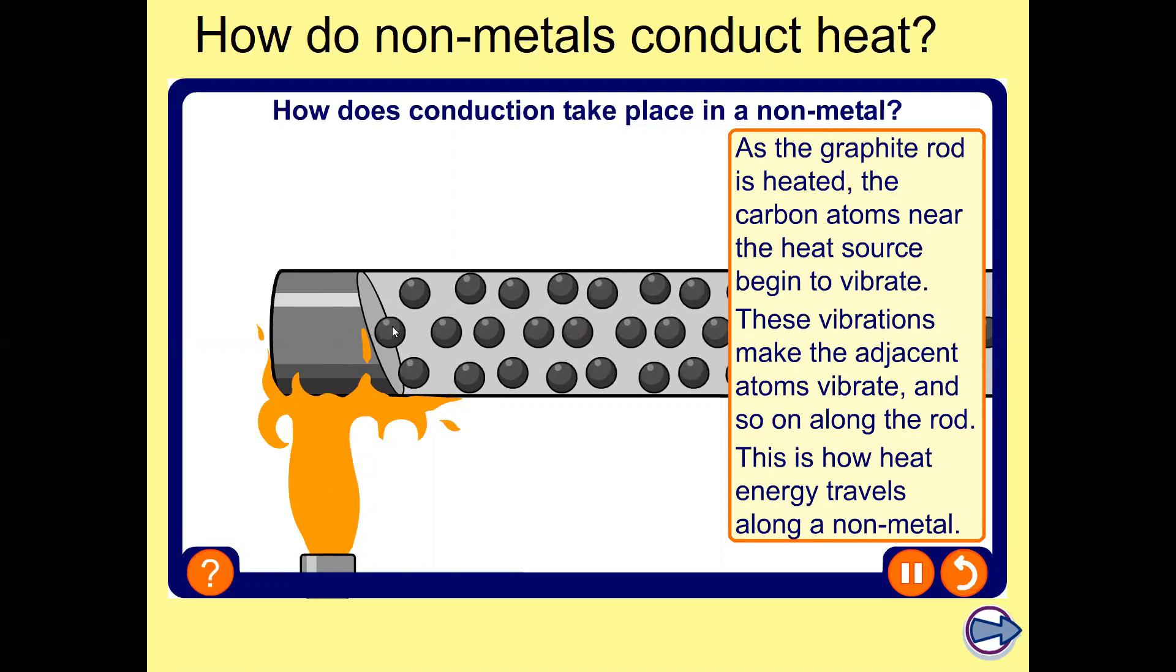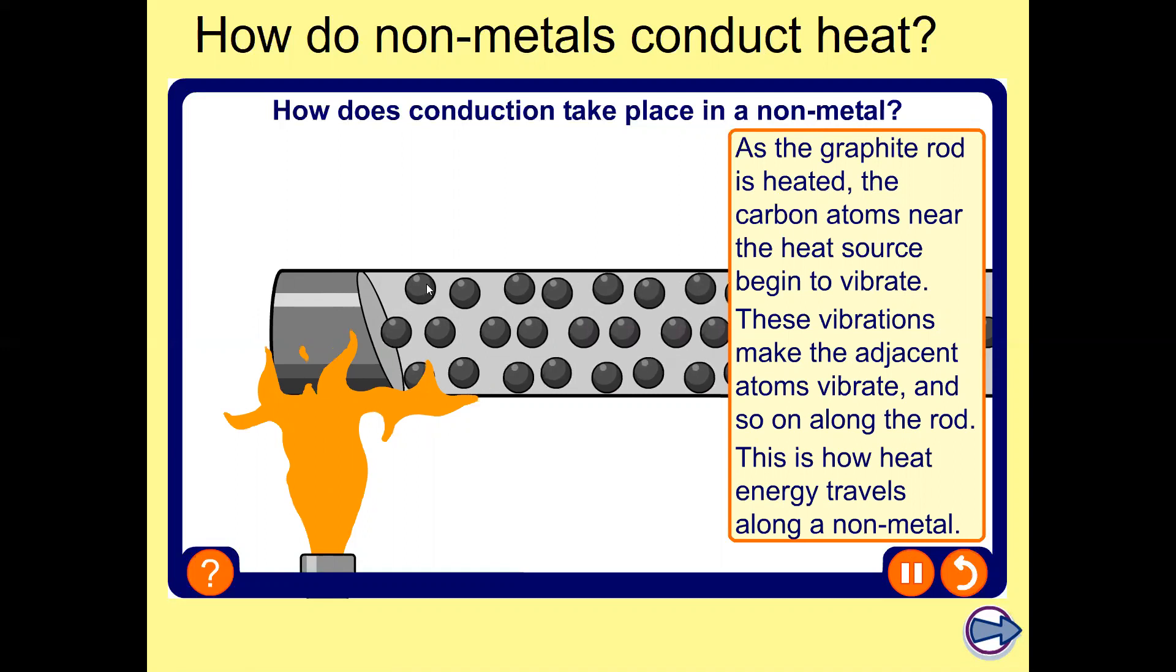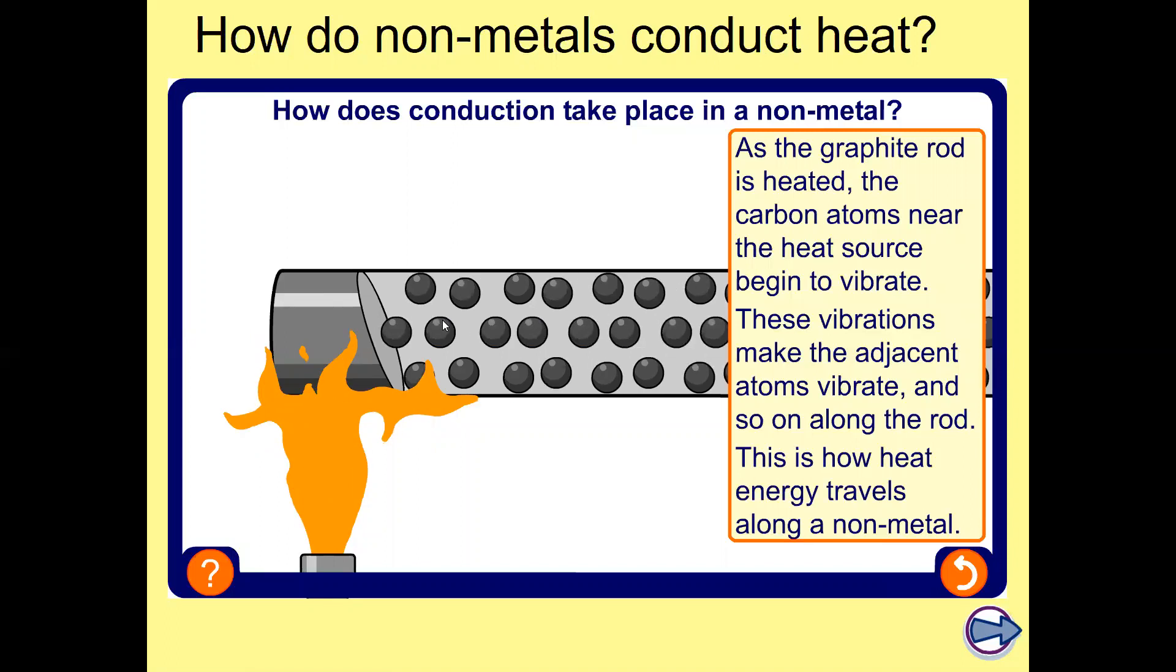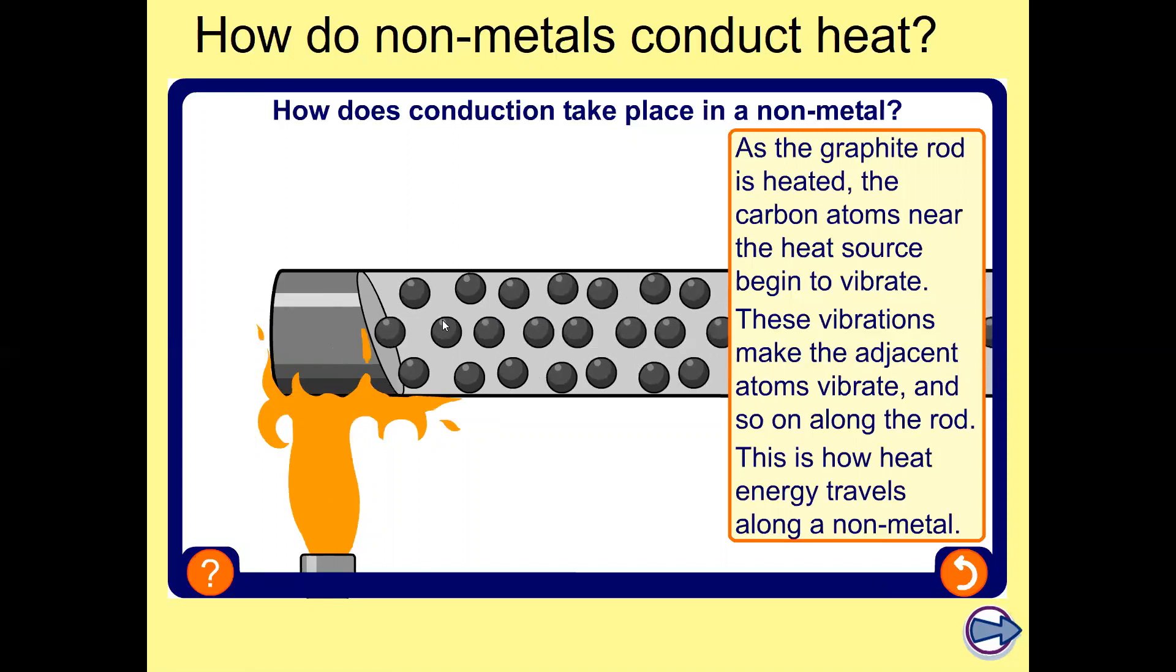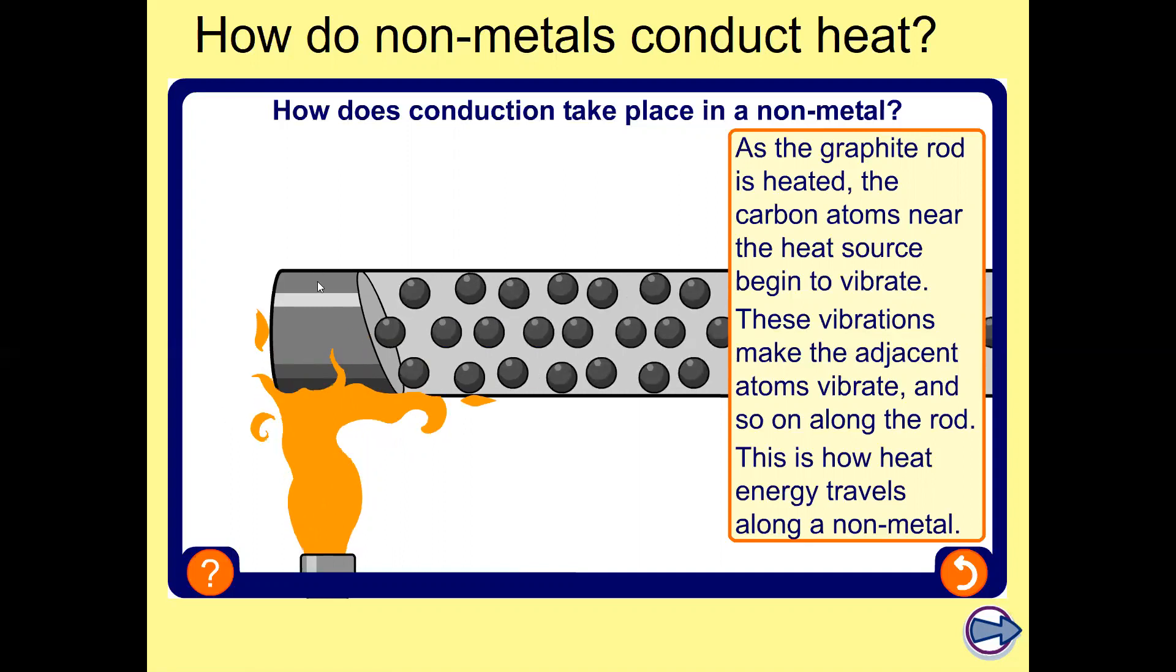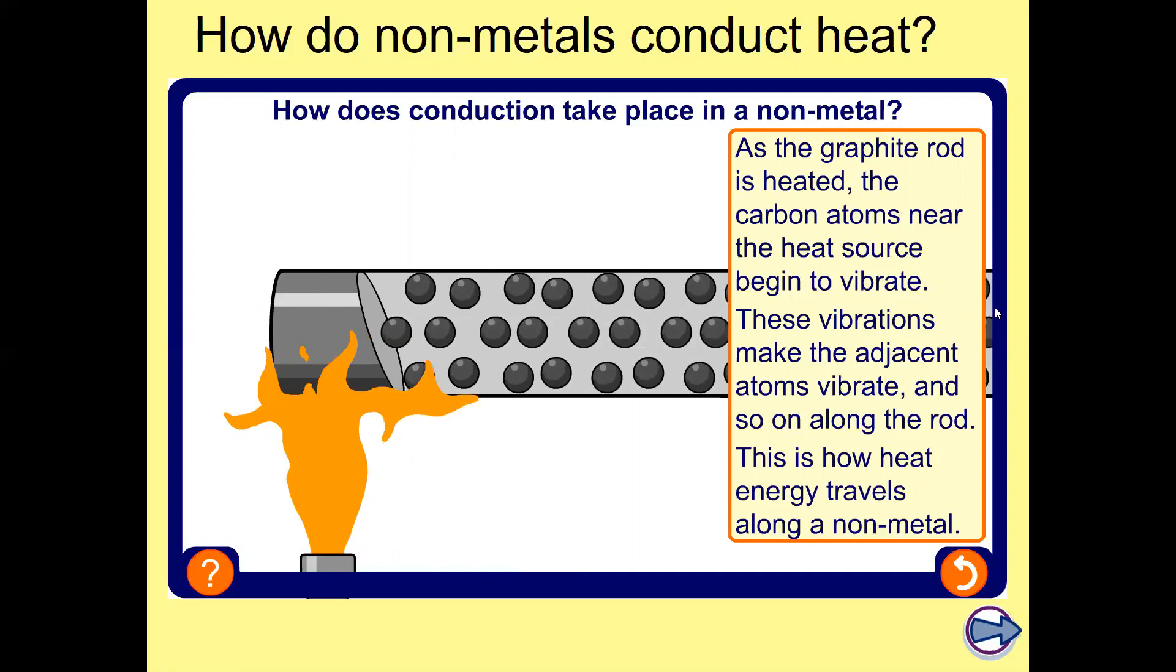When they start vibrating, they're going to pass the thermal energy to the adjacent carbon atoms and so on along the rod. And that is how the heat is going to transfer from one end of non-metal to another end of the non-metal.